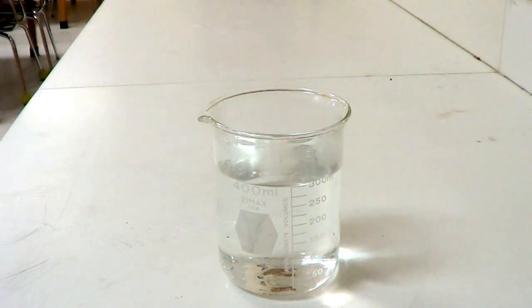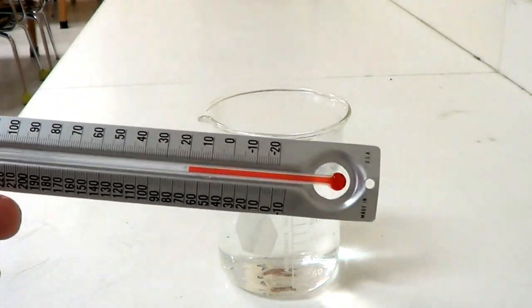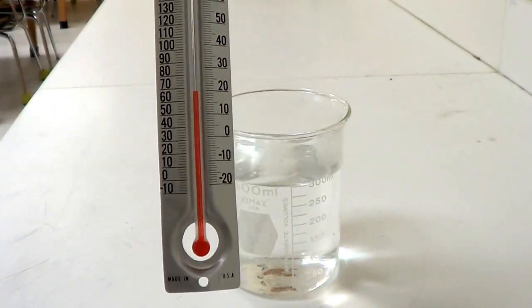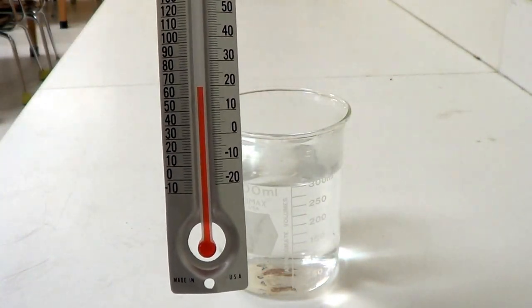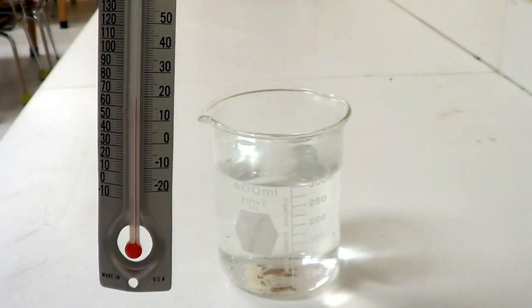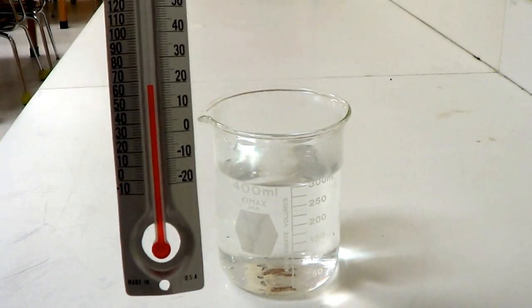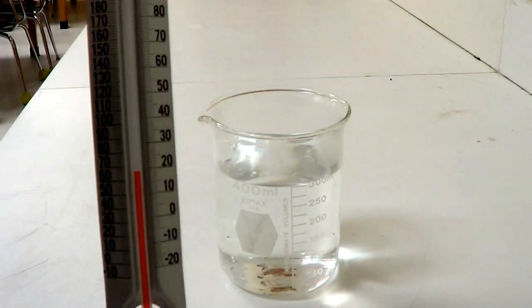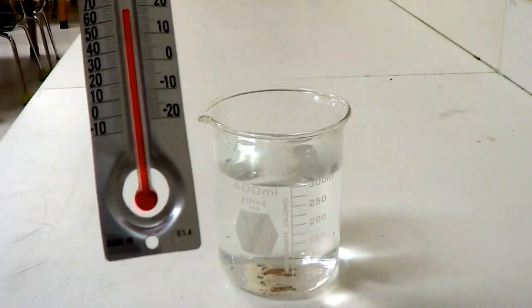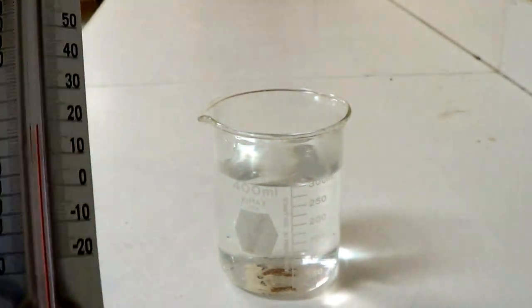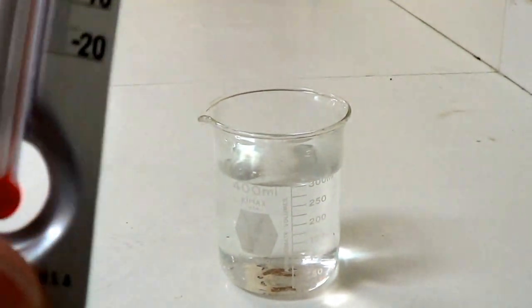So here you have a thermometer and you can see this is a glass and tube thermometer. There's a glass tube with a liquid in it and as that liquid heats up, thermal expansion will cause it to rise up that glass tube. And you can see there are markings on here that show us what the temperature is.